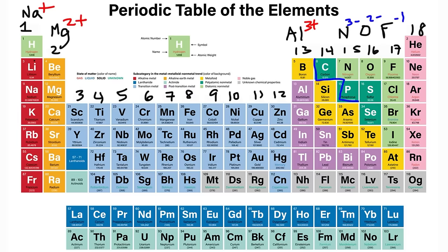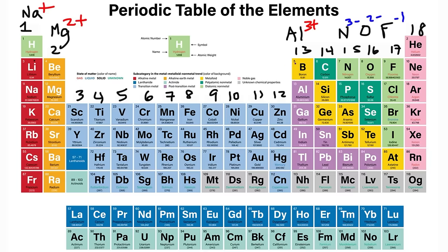Nonmetals don't conduct electricity, unlike metals. Metals are malleable and ductile, but nonmetals are brittle. Between the metals and the nonmetals we have a group called the metalloids. The metalloids don't conduct electricity as well as metals, but they're not insulators like nonmetals — they can conduct a small amount of electricity, so they're called semiconductors.